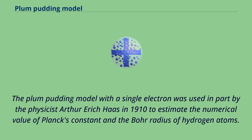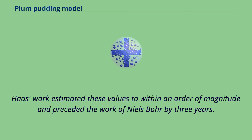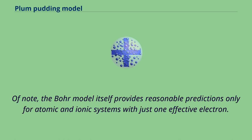The Plum-Pudding model with a single electron was used in part by physicist Arthur Erich Haas in 1910 to estimate the numerical value of Planck's constant and the Bohr radius of hydrogen atoms. Haas estimated these values to within an order of magnitude and preceded the work of Niels Bohr by three years. Of note, the Bohr model itself provides reasonable predictions only for atomic and ionic systems with just one effective electron.